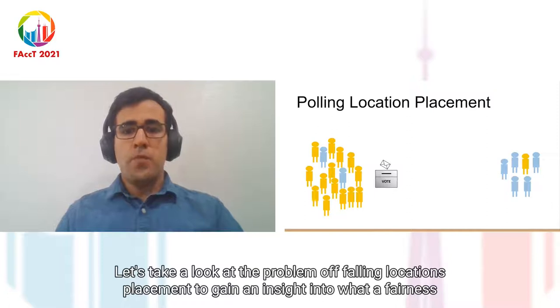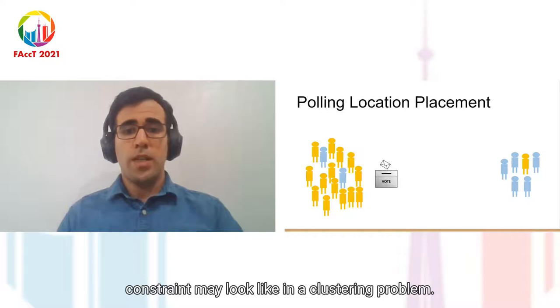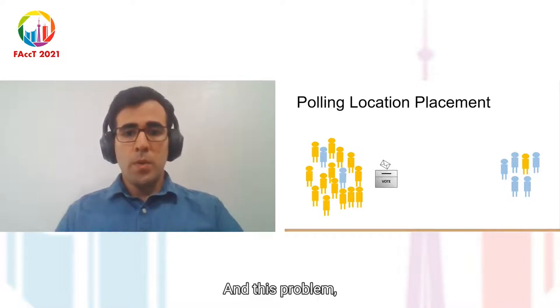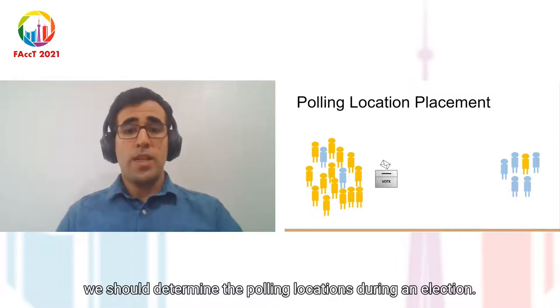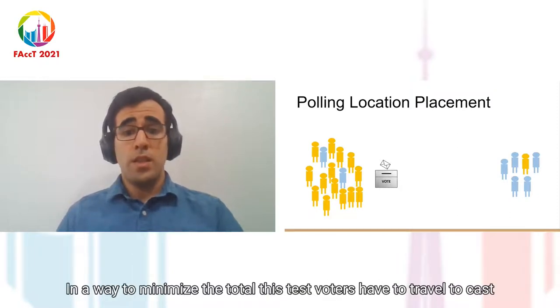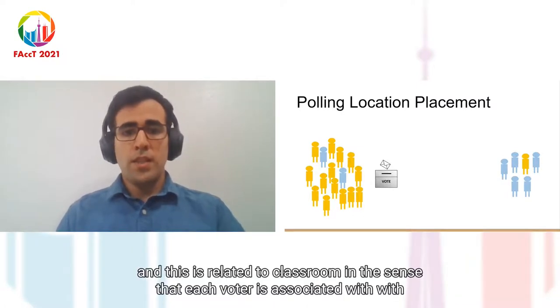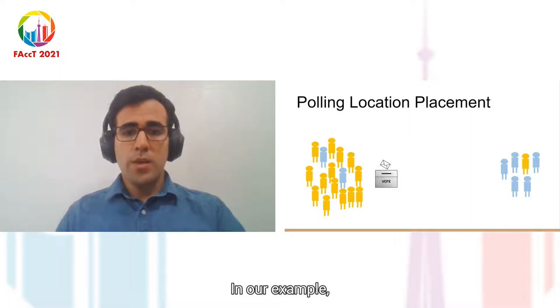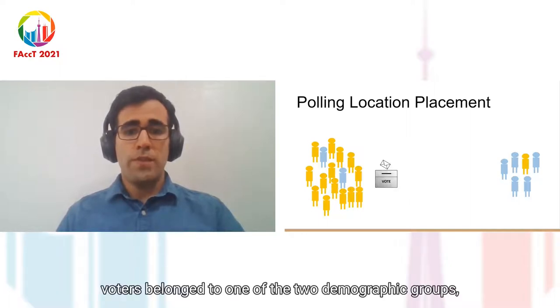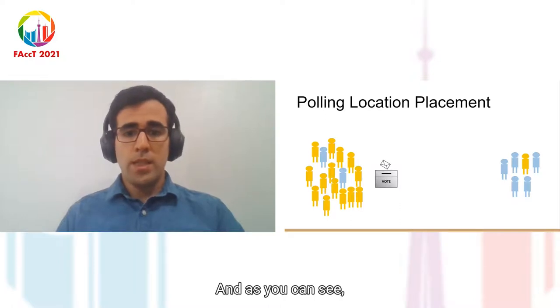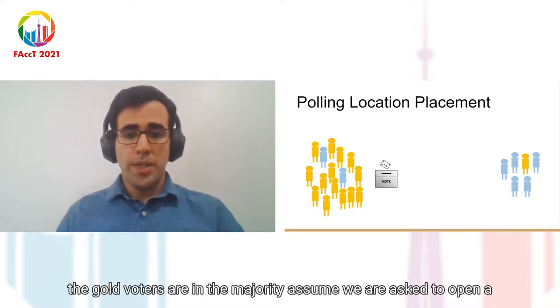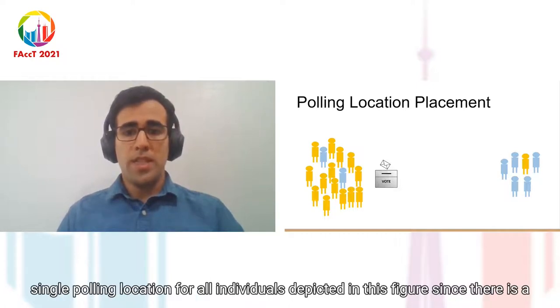Let's take a look at the problem of polling locations placement to gain an insight into what a fairness constraint may look like in a clustering problem. In this problem, we should determine the polling locations during an election in a way to minimize the total distance voters have to travel to cast their vote. This is related to clustering in the sense that each voter is associated with one polling location. In our example, voters belong to one of the two demographic groups, gold or blue. And as you can see, the gold voters are in the majority. Assume we are asked to open a single polling location for all individuals depicted in this figure.